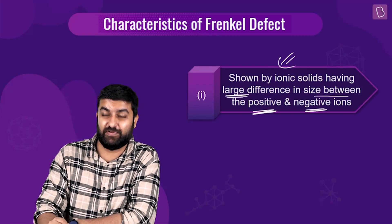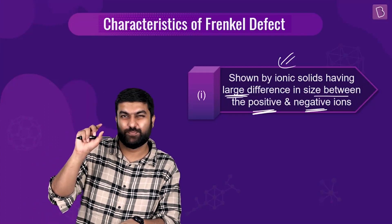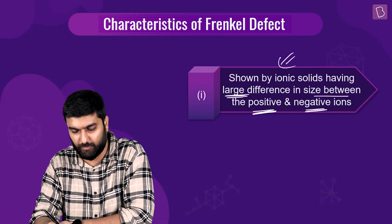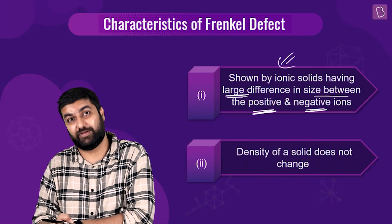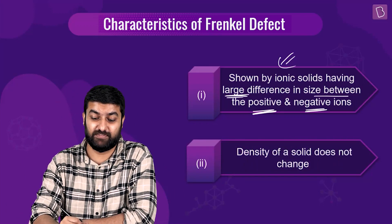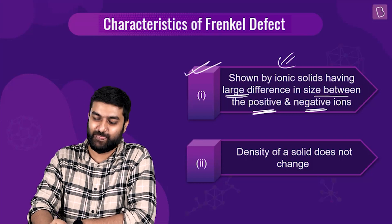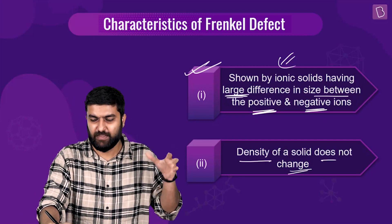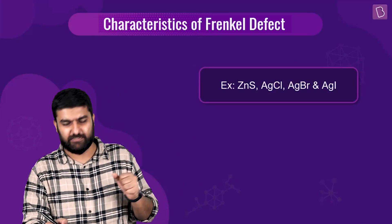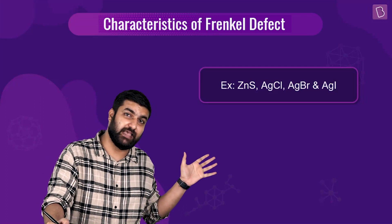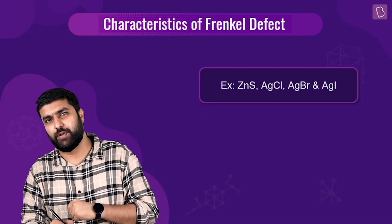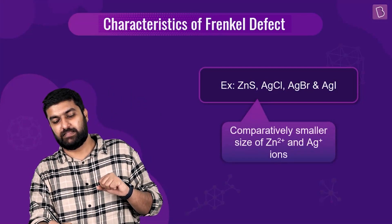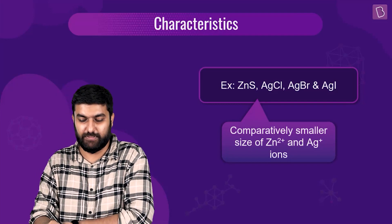The Frenkel defect is shown by ionic solids having a large difference between the positive and negative ions — for example, when you have a very small cation and a very large anion. Remember, there could be an exam question based on just this one point. The density of the solid does not change.